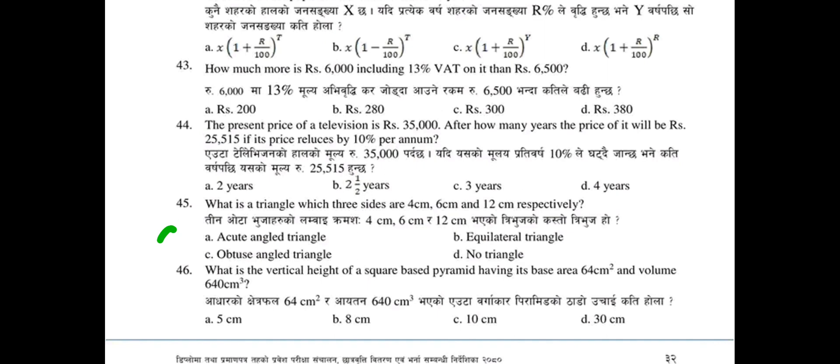Question 45: What type of triangle has three sides of 4 centimeters, 6 centimeters, and a certain interval in centimeters respectively? Options: acute, equilateral, obtuse, or no triangle. Question 46: What is the vertical height of a square-based pyramid having base area 64 cm² and volume 640 cm³?